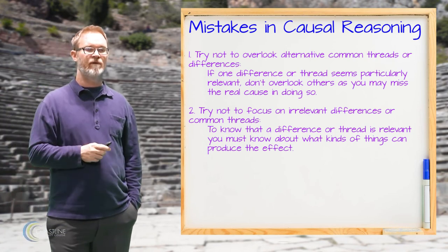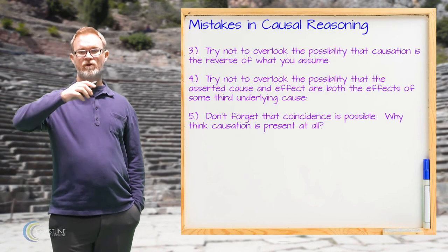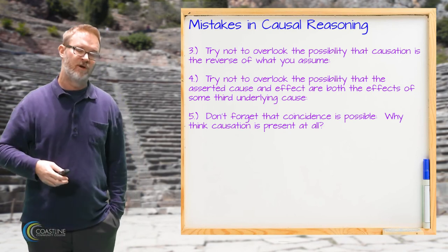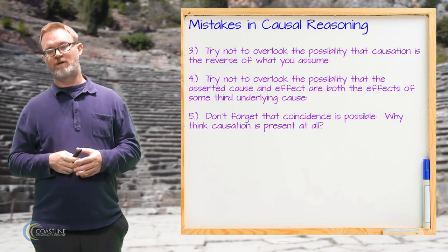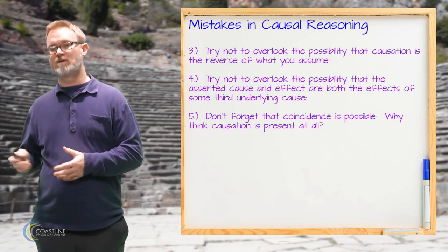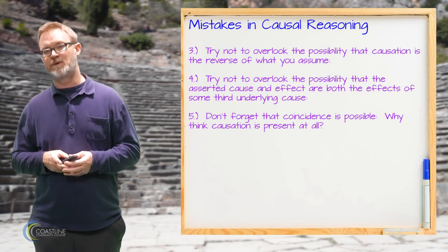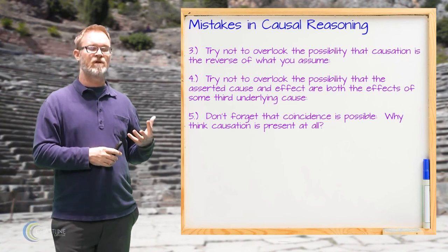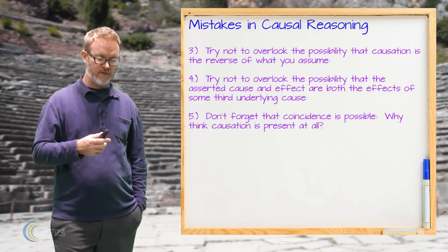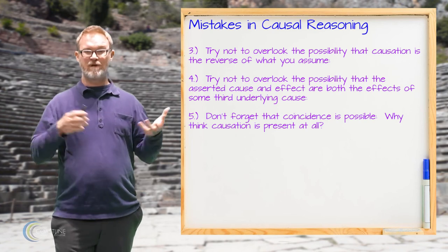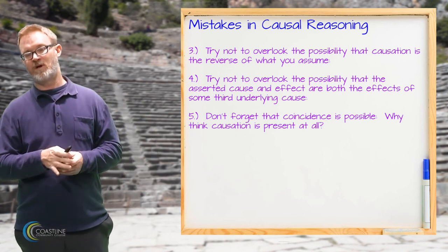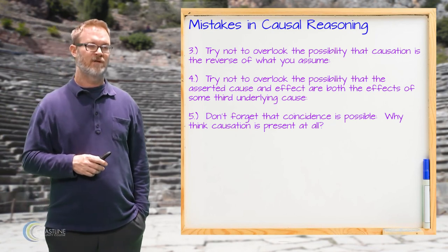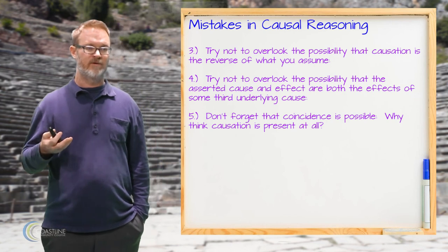Imagine that you're climbing a rope and the rope breaks and you fall. You suppose that the rope breaking is what caused you to fall, but in fact it could be just the reverse. That's one of the things we want to keep in mind as well — sometimes when we assume that one thing is the cause of the other, it could be the other way around. What we assume the effect to be could in fact be the cause. So we want to be open-minded enough for that.